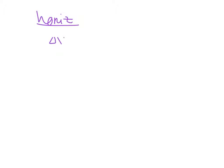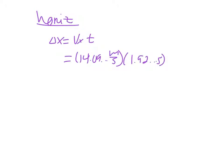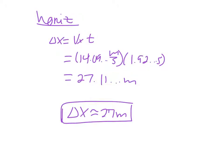Once we have time, move into the horizontal. Since horizontal velocity is constant, delta x = vx × t = 14.09 m/s × 1.92 s = 27.11 meters. With two sig figs, the tennis ball travels about 27 meters horizontally. The only trick in this problem was making the initial y velocity negative because it was thrown downward — otherwise the steps are the same as every other projectile motion problem.